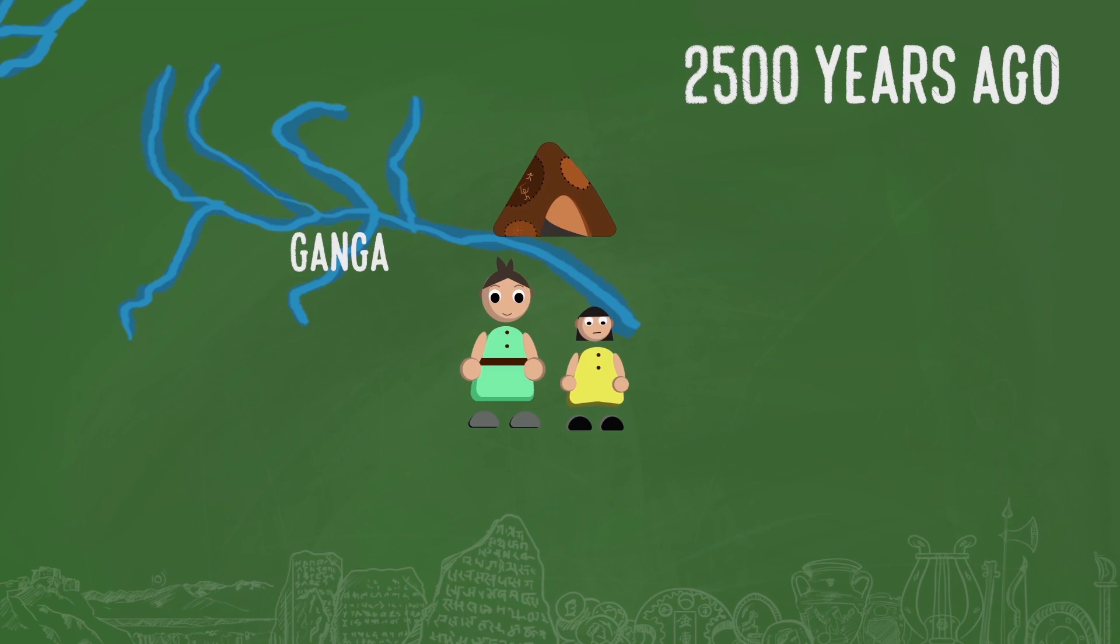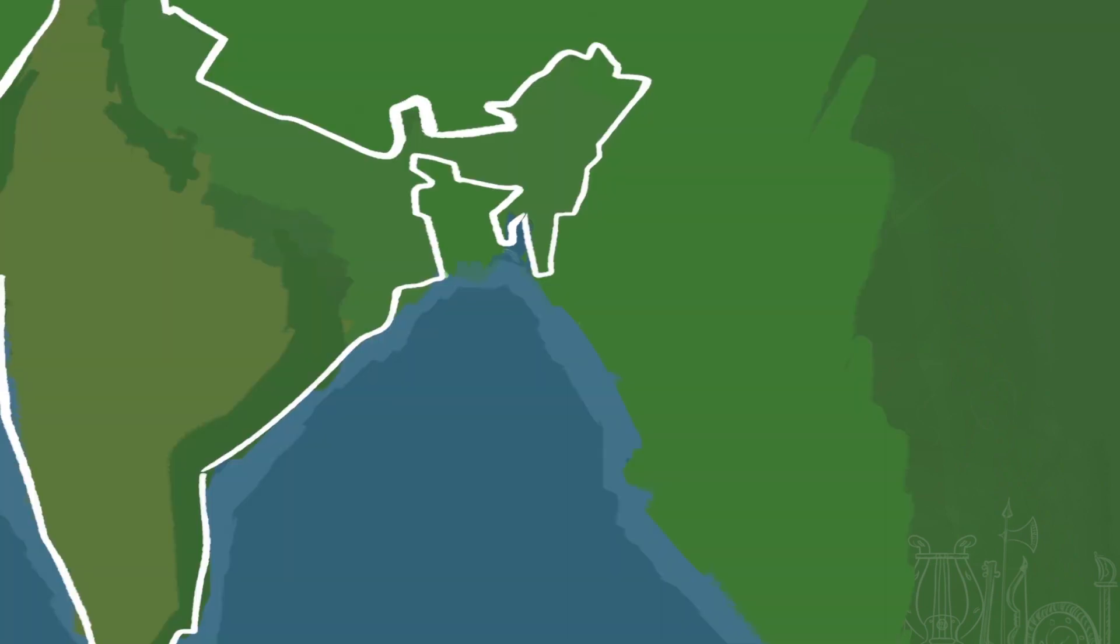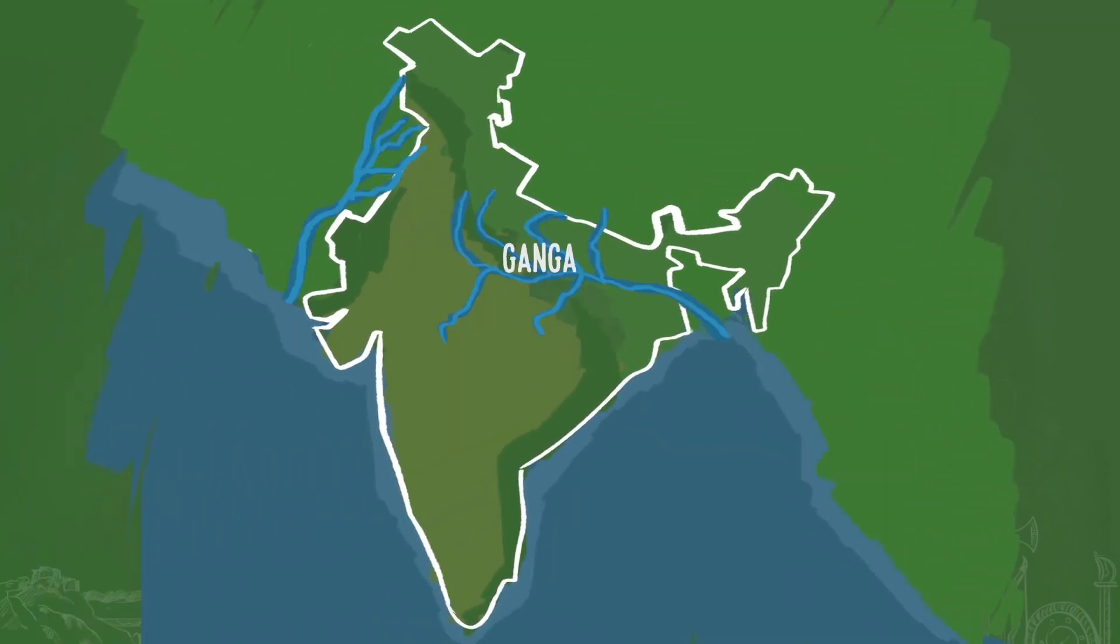In ancient times, the area south of Ganga was called Magadha. Its rulers were very powerful and they set up a very big kingdom.